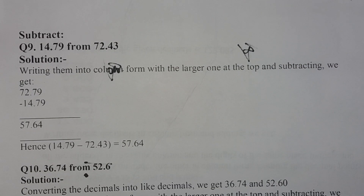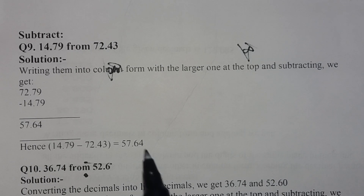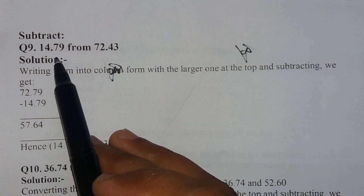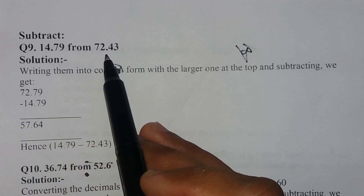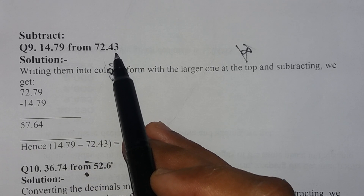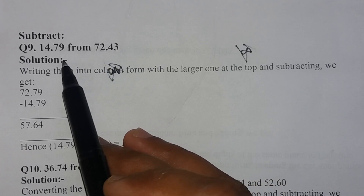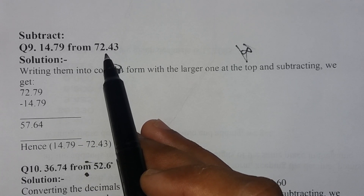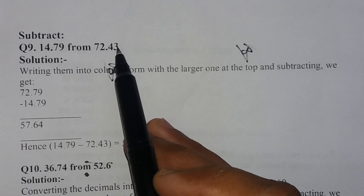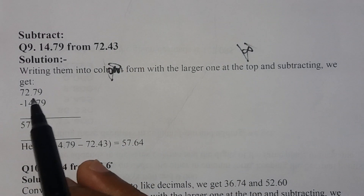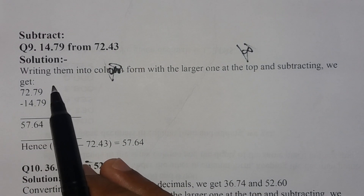In question number 9, we will learn how to subtract decimal numbers. We have been given 14.79 to subtract from 72.43. We will write them in column form as 72.43 minus 14.79.